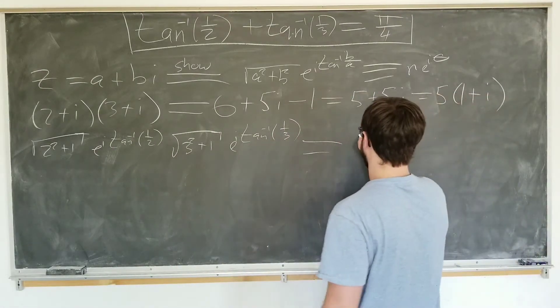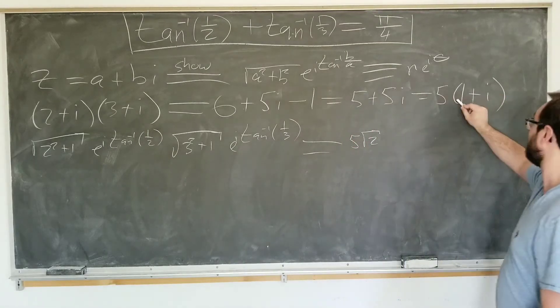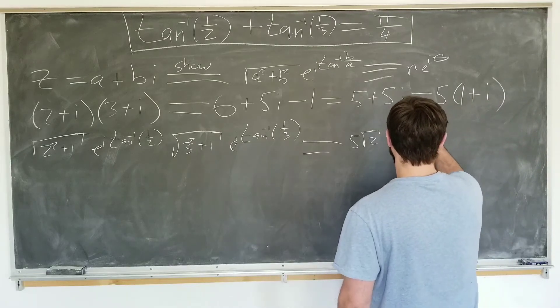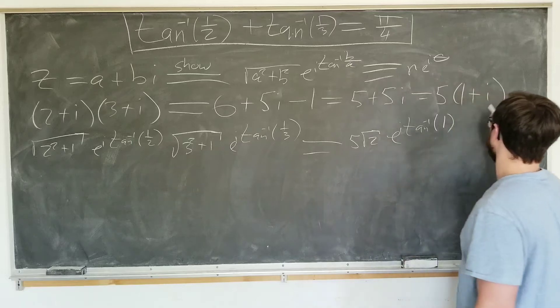on this side, 5 square root of 2, because this has the magnitude of square root of 2, e to the i inverse tangent of one, because this over this is one.